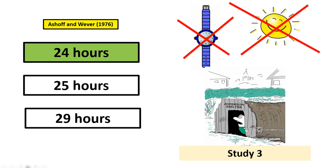And finally, Aschoff and Wever in 1976 placed participants in a World War II bunker without the influence of any exogenous zeitgebers. They found that their sleep-wake cycles mainly kept to the 24-hour cycle, give or take a few hours — some days it was a 24-hour cycle, some days it was a 29-hour cycle, but generally it was around 24 hours.